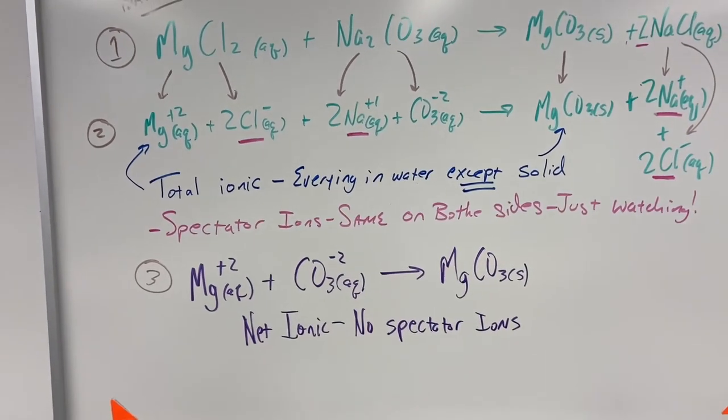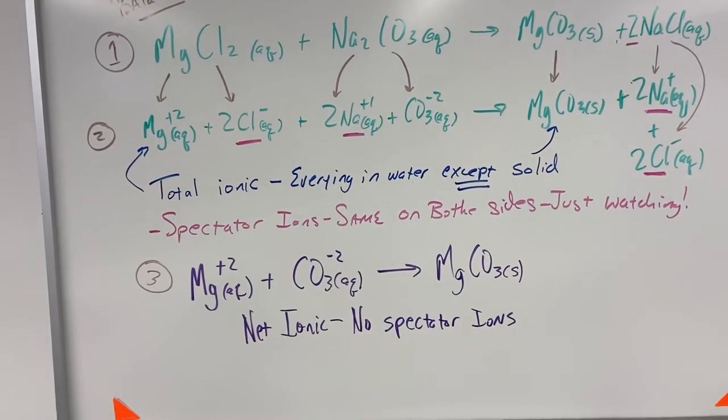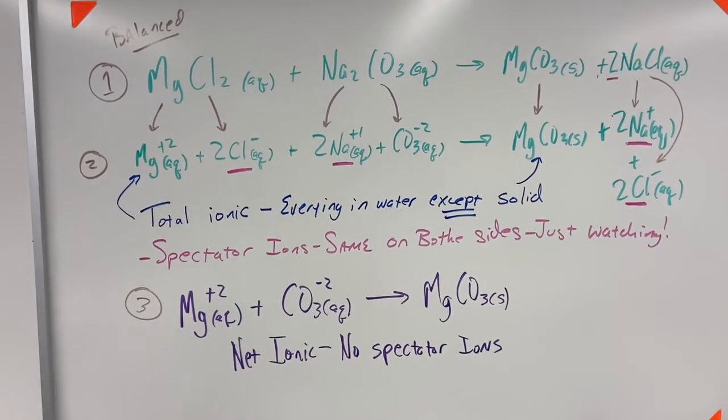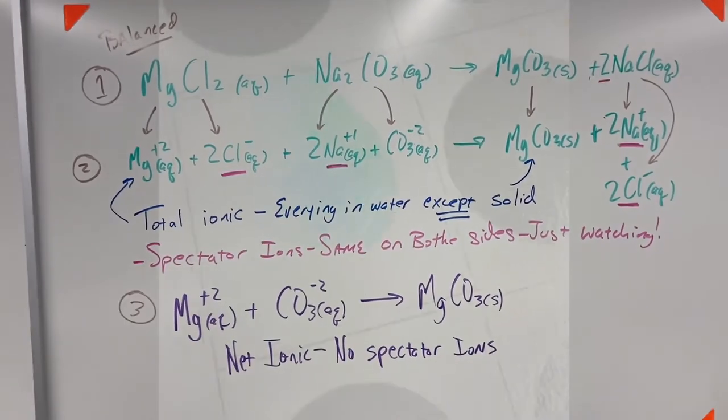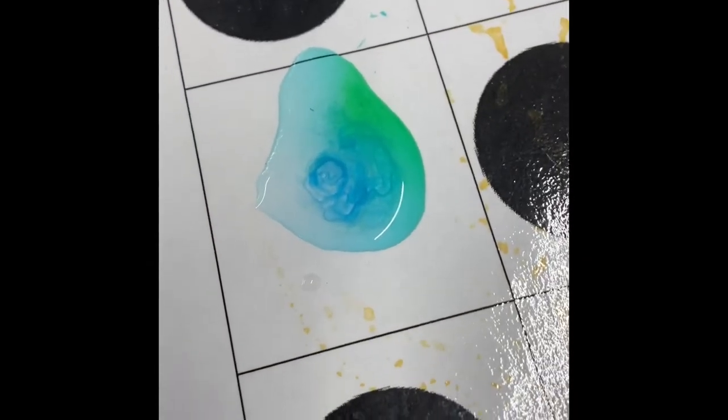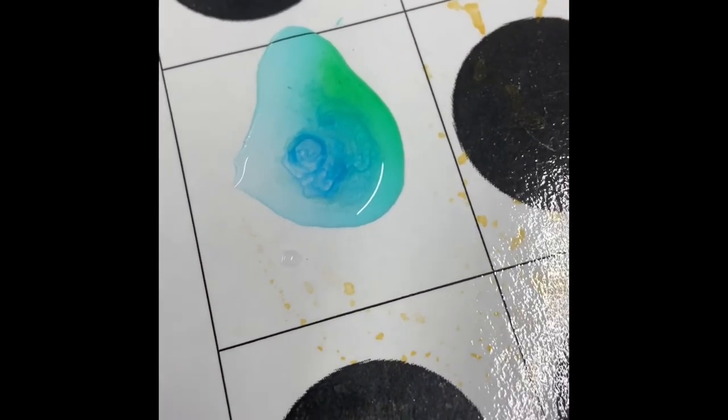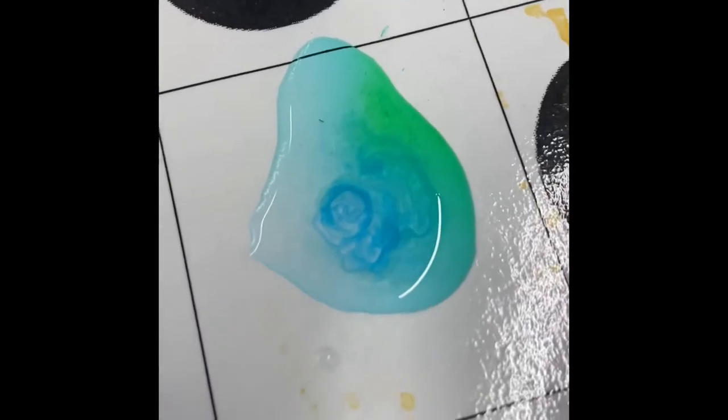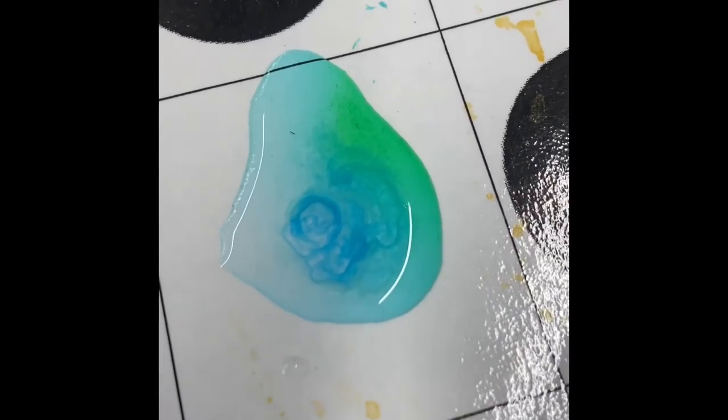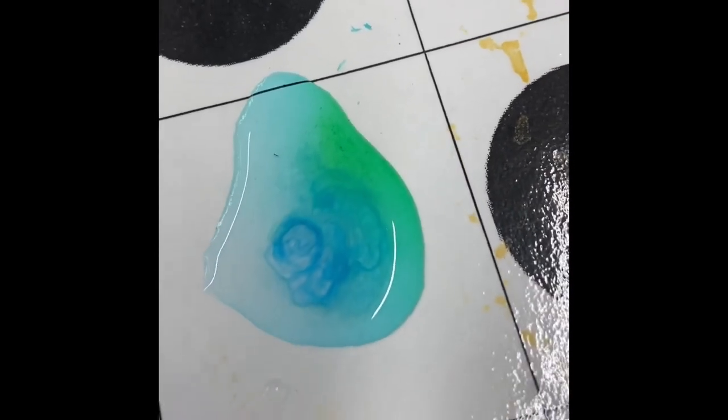We're left with the net ionic equation, and that's what we're shooting for. Through puddle chemistry, we can actually see this happen. Here we go, folks. This is another one - copper chloride and sodium hydroxide. Really cool design there. What's the net ionic equation? Inquiring minds would like to know, so let's go find out.